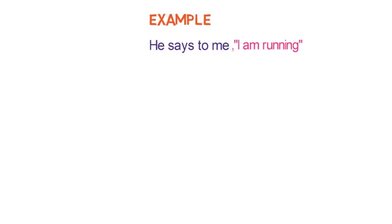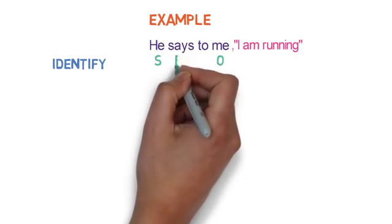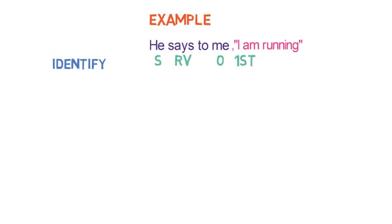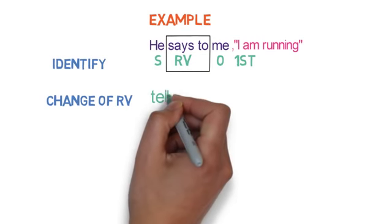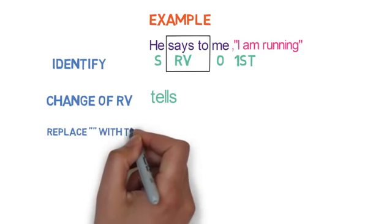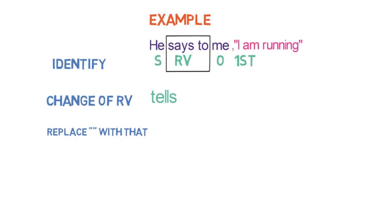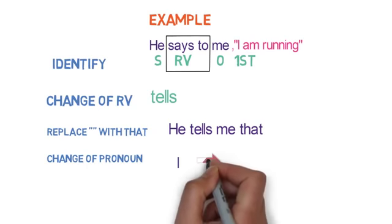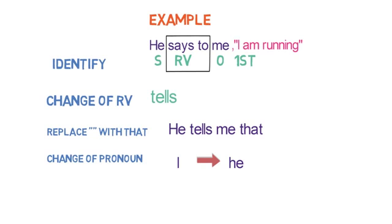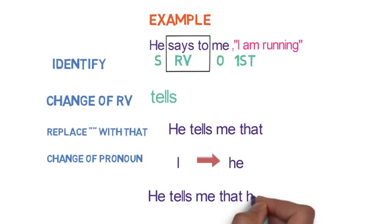Example 5: 'He says to me, I am running.' Step 1 — Identification: 'he' is the subject, 'me' is the object, 'says to' is the reporting verb. Since 'says to' is in present form, we will not check the tense. Step 2: 'says to' converts to 'tells'. Step 3: replace inverted commas with 'that'. Step 4: 'I' converts to 'he'. Steps 5 and 6 are skipped as the reporting verb is in present tense. Final result: 'He tells me that he is running.'